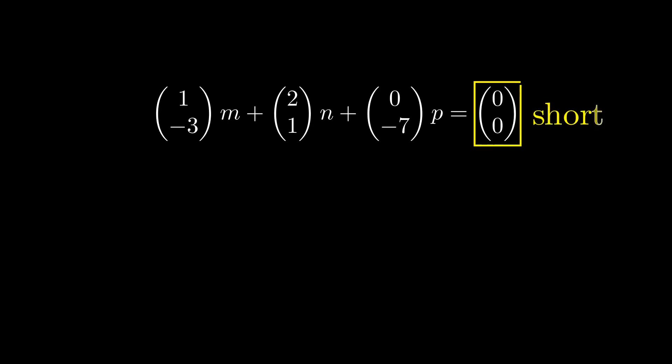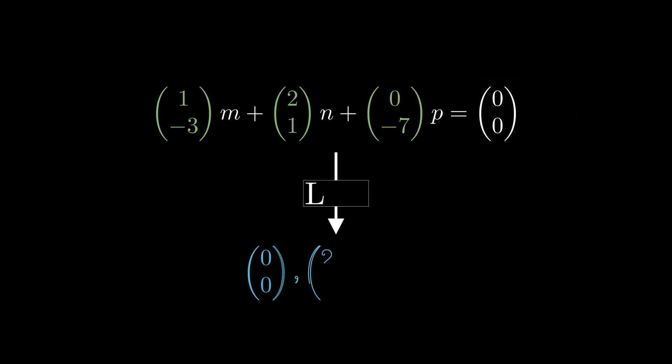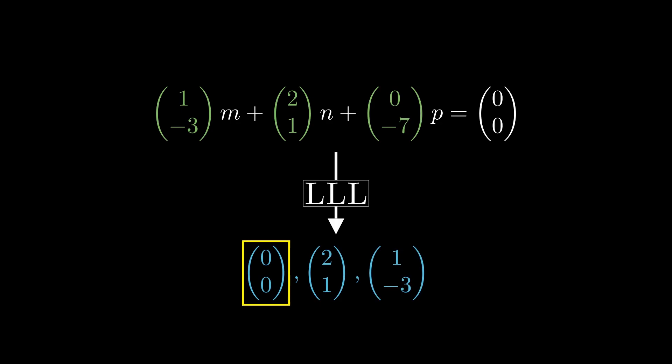The reason we can use LLL here is that the right-hand side is (0, 0), which is the shortest vector you can get. You take the three vectors on the left-hand side, form a basis, apply LLL, and get a new basis. Since this new basis spans the same lattice as the original, all new basis vectors are linear combinations of the original vectors. If the first vector is (0, 0), the algorithm is telling us (0, 0) is a linear combination of (1, -3), (2, 1), and (0, -7) — solving our equation — but we still don't know the values of m, n, or whether p is 1.